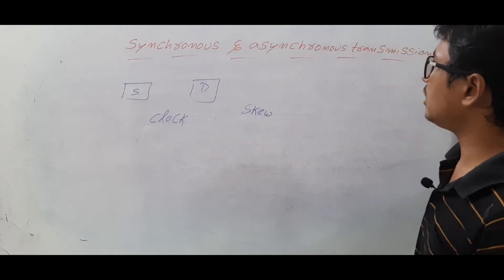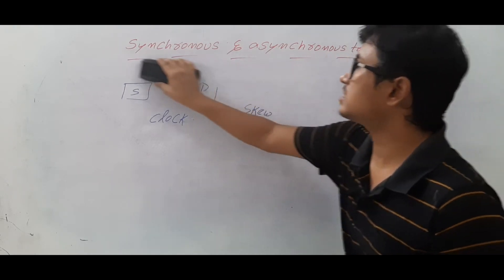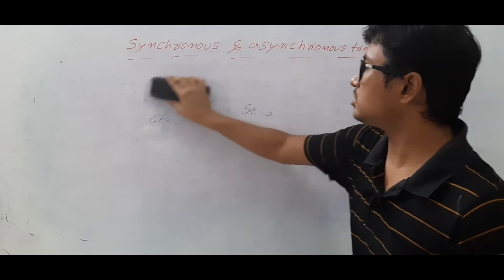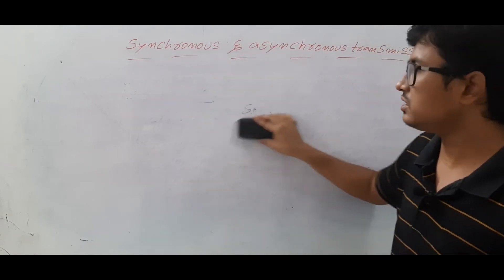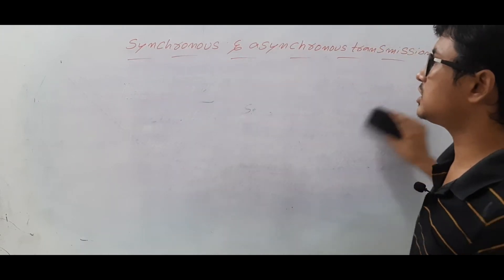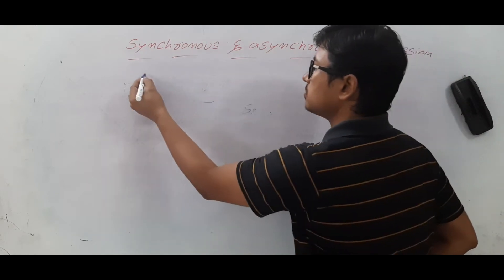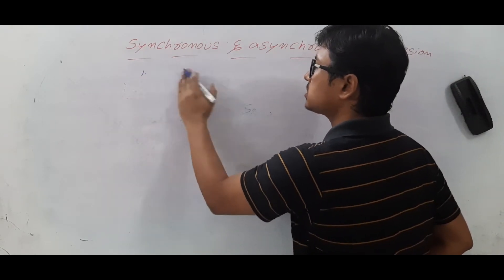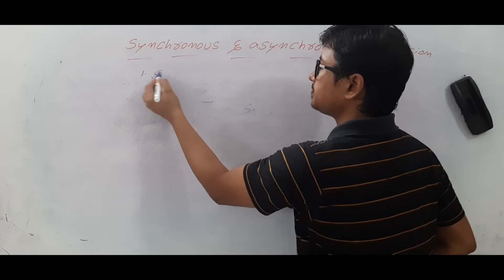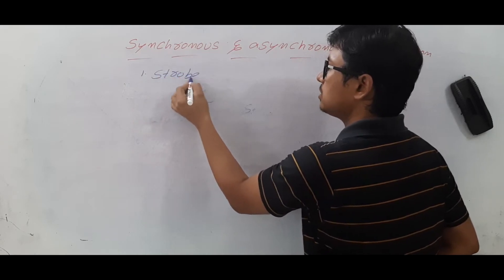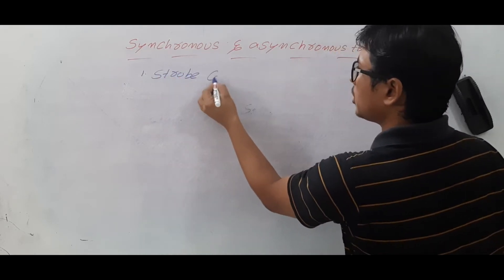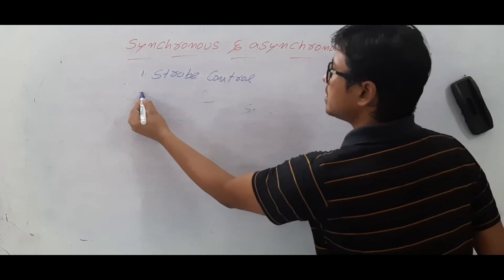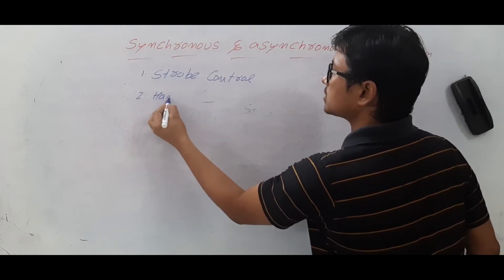Because of this, we move to asynchronous communication. In asynchronous communication, synchronization can be achieved using two mechanisms: one is strobe control signals, and the other is the handshaking mechanism.